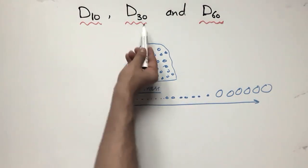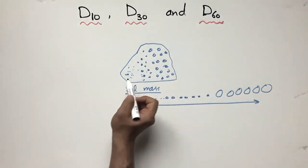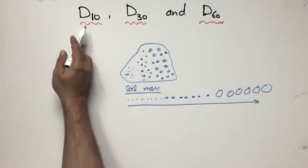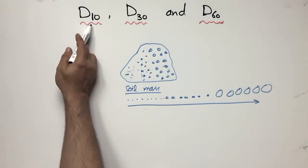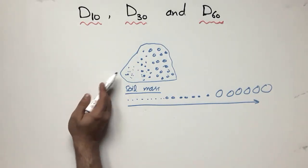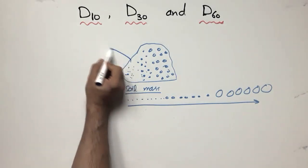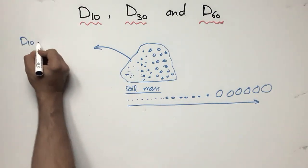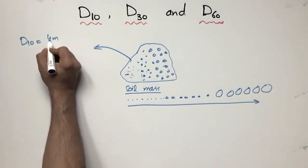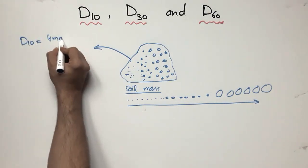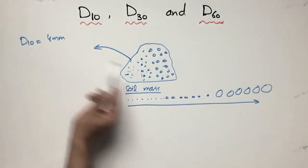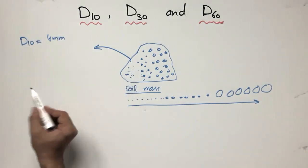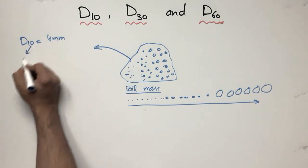D10, D30, and D60 classify the different particle sizes in a soil sample. Let's consider an example: the D10 for this soil sample is 4 millimeters. So what does D10 mean?